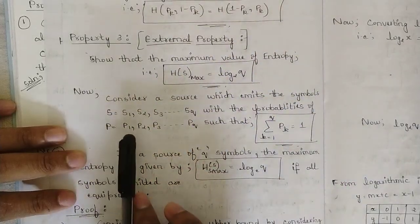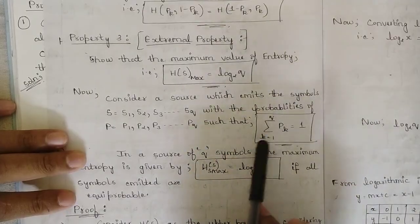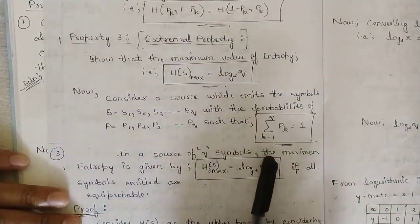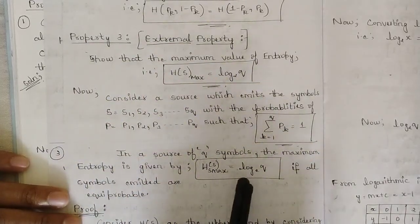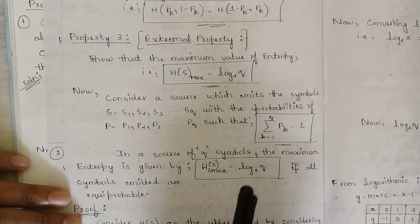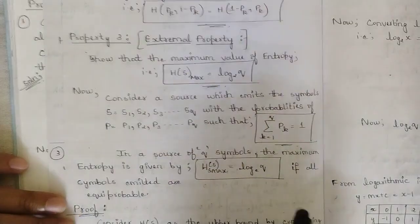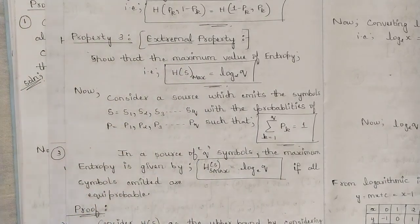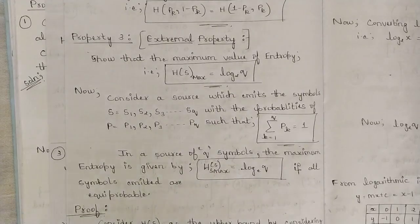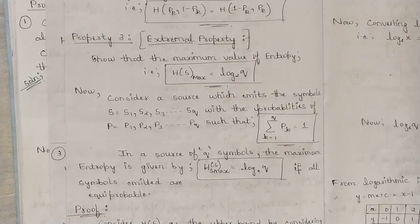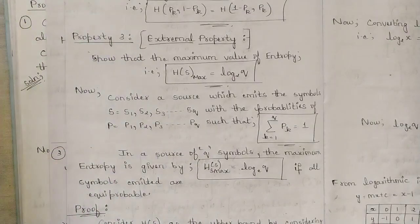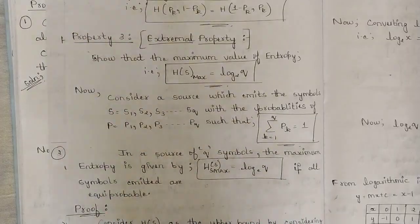Consider a source which emits symbols S = {S1, S2, S3, ..., SQ} with probabilities P = {P1, P2, P3, ..., PQ} such that summation of K equal to 1 to Q of P(K) equals 1. In a source of Q symbols, the maximum entropy is given by H of S max equal to log Q. We need to prove this to base 2. This maximum is achieved when all emitted symbols are equi-probable, meaning all probabilities are equal — a condition not generally satisfied with different probability values.